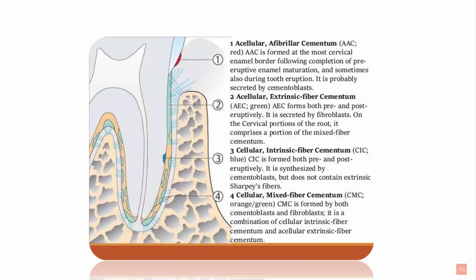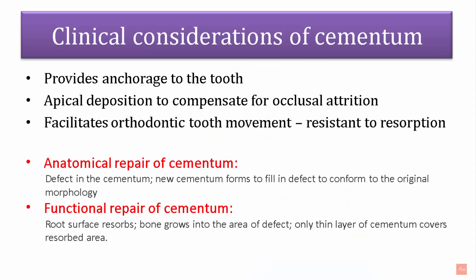In summary of distribution: acellular afibrillar cementum is mainly in the cervical/coronal portion; acellular extrinsic fiber cementum is apical to it and functions in anchorage by attaching Sharpey's fibers of the periodontal ligament; cellular intrinsic fiber cementum is present in resorption lacunae; and cellular mixed stratified cementum occupies the apical zone and furcation areas.